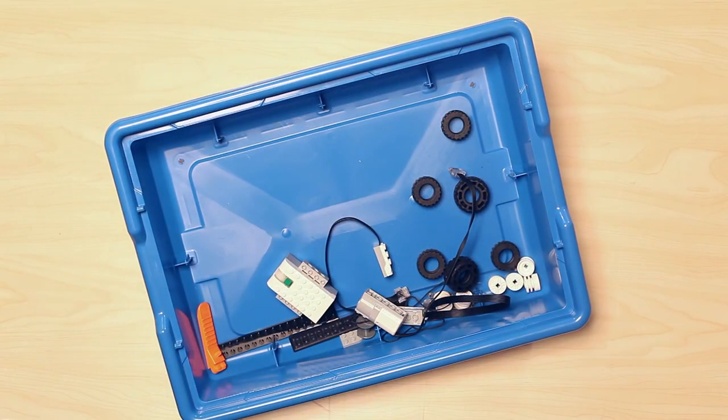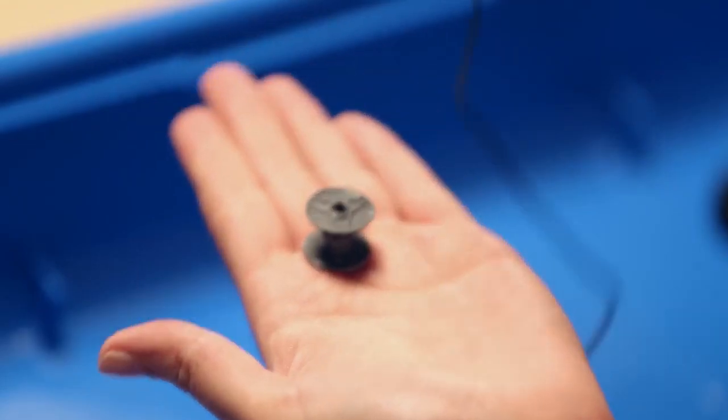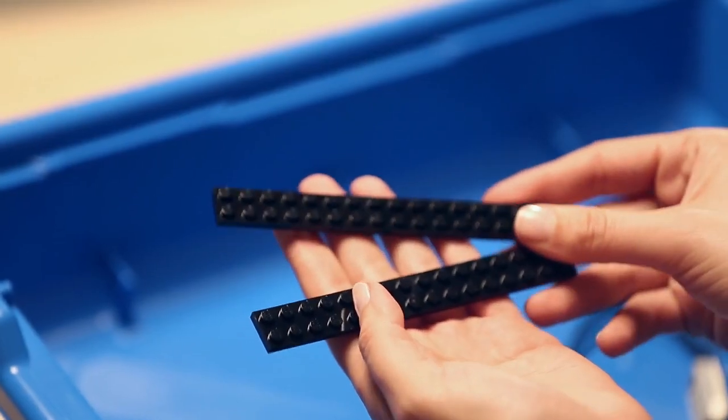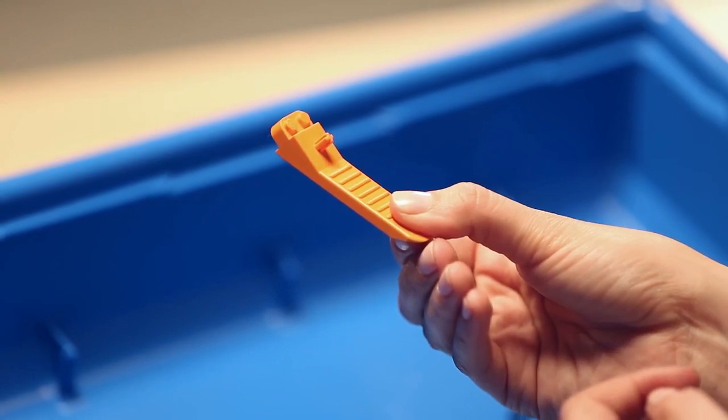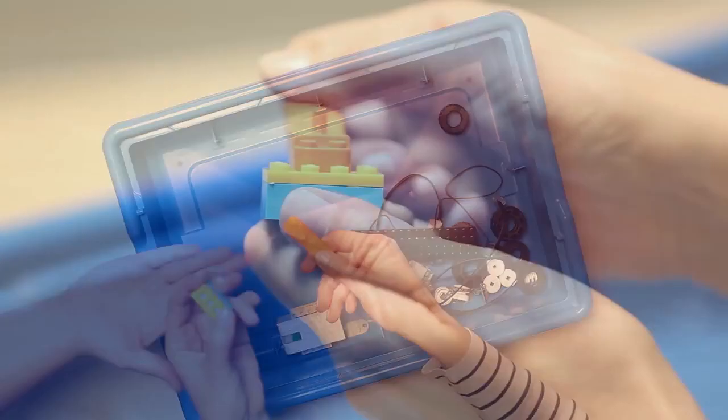Finally, rounding out the set we have a variety of larger elements including large tires and hubs, a bobbin and string, a chain element, plates, and finally a brick separator which saves not only your time but also your fingernails.